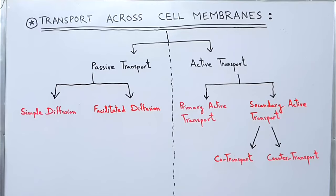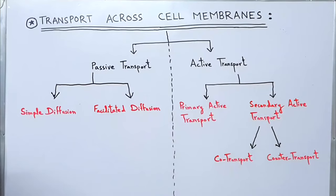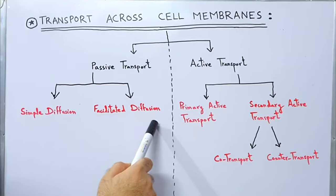Transport across cell membranes. There are two types of transport: passive transport and active transport. In passive transport, energy is not required and it occurs passively. While in active transport, energy is required and used. There are two types of passive transports: simple diffusion and facilitated diffusion.